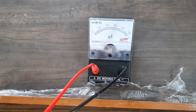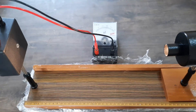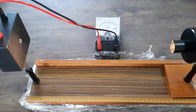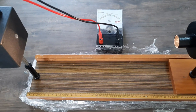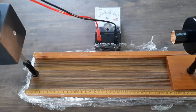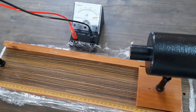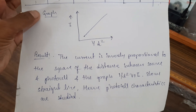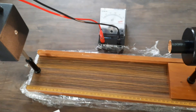So this is how you perform this experiment. Finally, you can write down the result: the current is inversely proportional to the square of the distance between the source and the photo cell, and the graph plotted is a straight line. Hence, the photo cell characteristics are studied. Thank you.